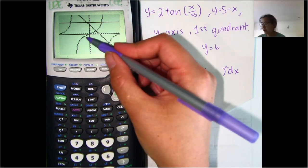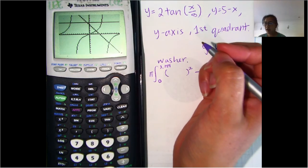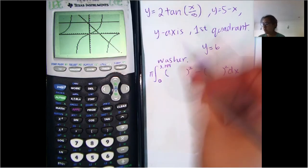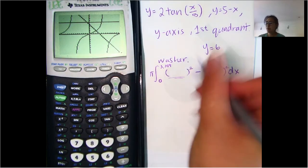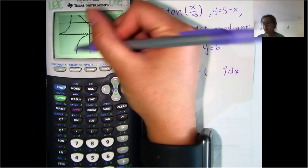Well, that would be this curve right here. So the 2 tangent of X over 5 curve. And so we're going to want to put that here, but we want to find the distance between Y equals 6 and that tangent curve.